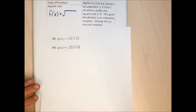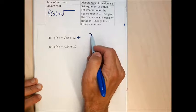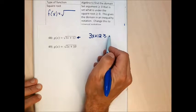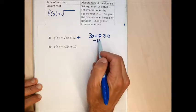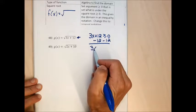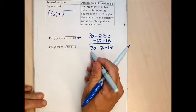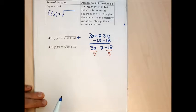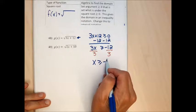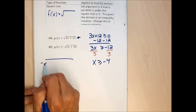For problem 48, to find the domain I'll set what's under the radical greater than or equal to zero and do the algebra. That involves two steps: subtract 12 from each side to get 3x ≥ -12, then divide both sides by 3. That gives the domain as the inequality x ≥ -4, which represents the interval from negative 4 to positive infinity.